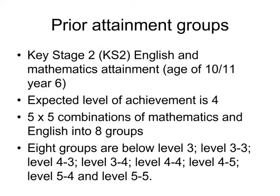For those unfamiliar with the English system: children take tests in English and maths at age 11. The expected level of achievement for an 11-year-old is level four, though some fall below and some above. Because you have two subjects, you technically have five-by-five combinations of maths and English, but many of those groups are empty or virtually empty. So we divided children into eight groups — below level three, level three, and various combinations up to five — so a parent can find their child's group and read off the performance of a school for that type of child.